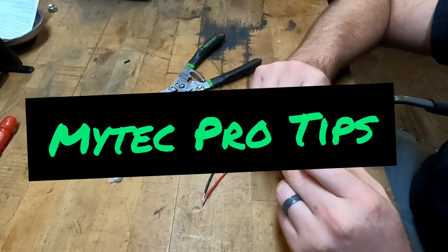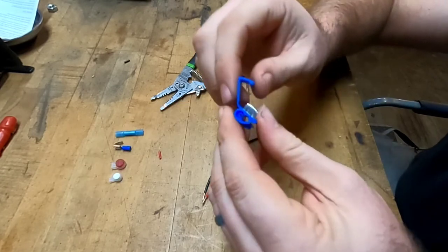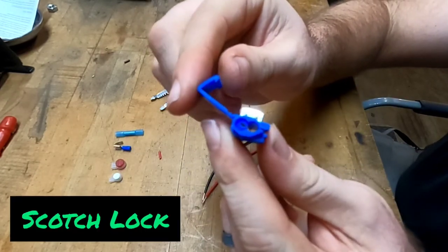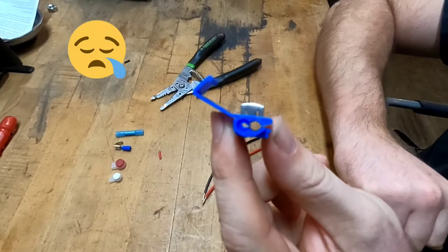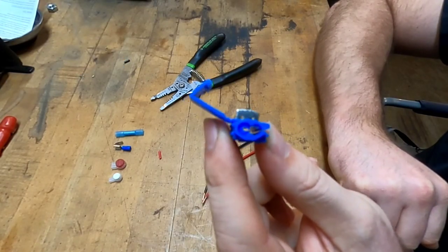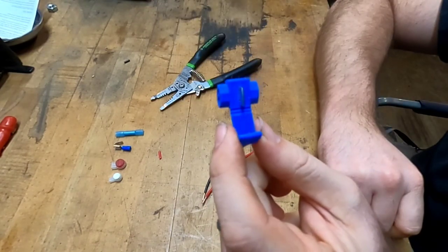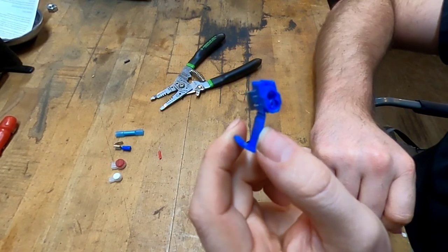What's up everybody? This is My Tech Pro Tips and on this episode we are going to discuss scotch locks or crush locks. These are sent with a lot of kits. It's a cheap out that manufacturers usually send these with to have you splice into an existing circuit and these suck for a number of reasons.